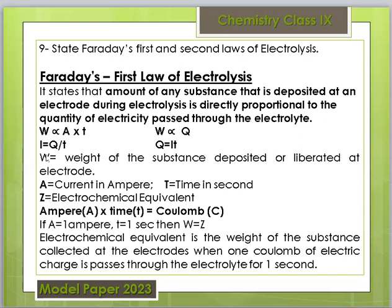Current A is measured in amperes, time T is measured in seconds, and Z is the electrochemical equivalent. After that, we have the formula: ampere multiplied by time is equal to coulombs.